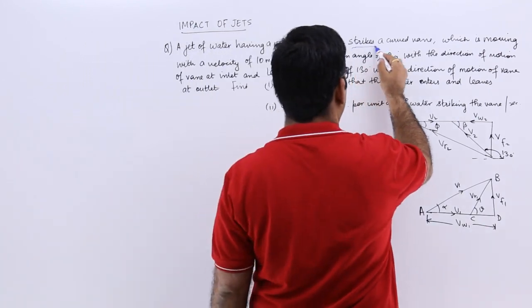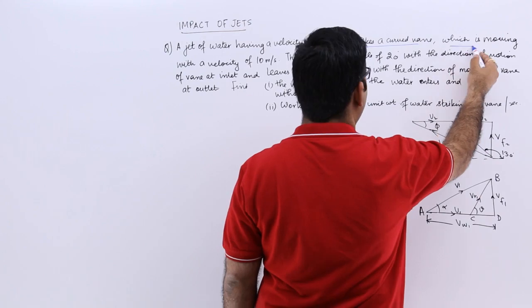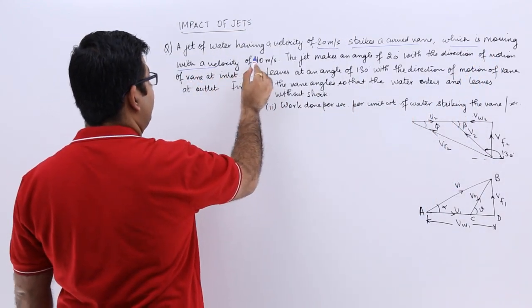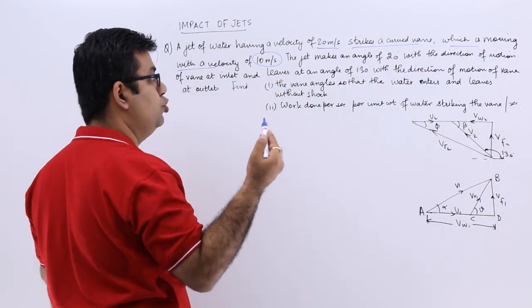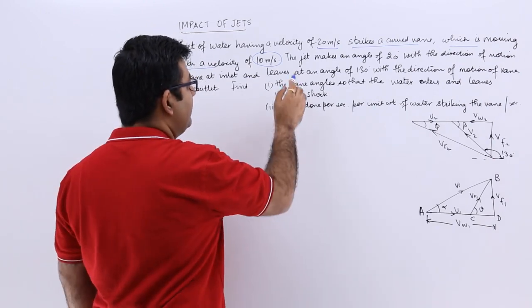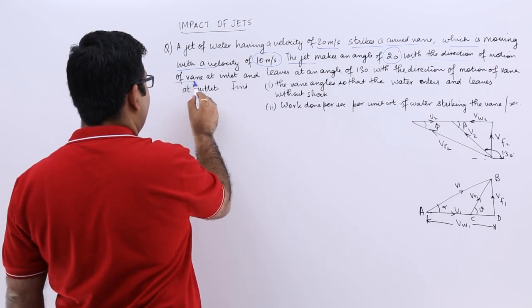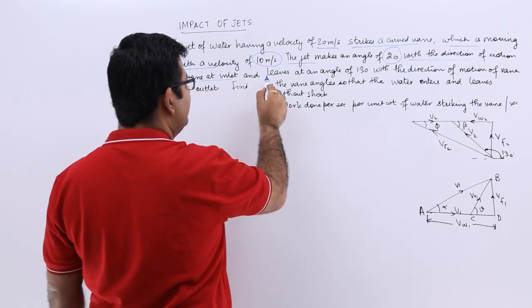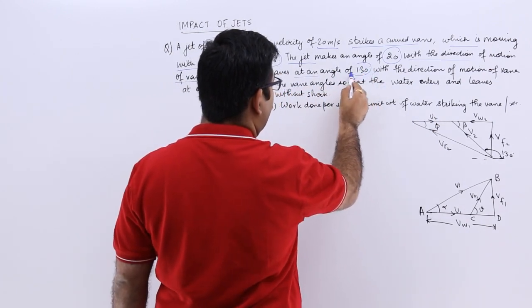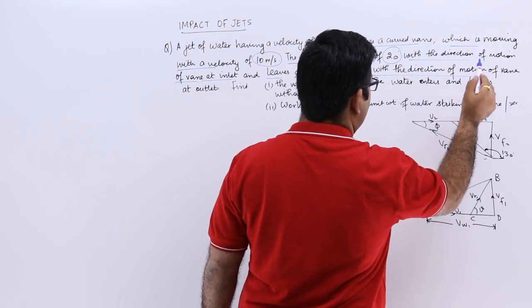It strikes a curved vein which is moving with the velocity of 10 meters per second, so this is U1. The jet makes an angle of 20 degrees with the direction of motion of vein at inlet and leaves at an angle of 130 degrees with the direction of motion of vein.